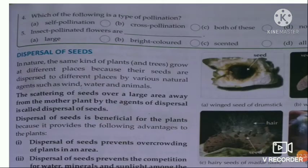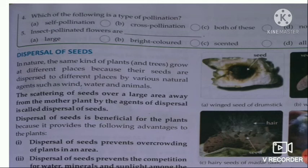These seeds prepared on a plant will not grow near that plant only. Seeds are scattered over a large area from the mother plant. We call this dispersal. Dispersal means the scattering of seeds over a large area, away from the mother plant, by agents of dispersal.